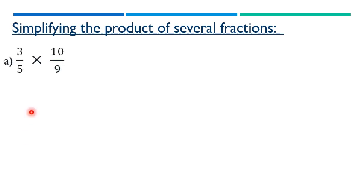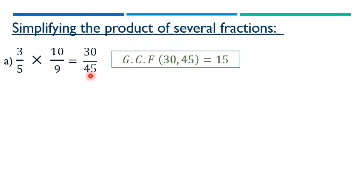Now the idea is simplifying the product of fractions. First method: take 3 over 5 times 10 over 9. Multiply to get 30 over 45. To get the simplest form, divide by the greatest common factor of 30 and 45, which is 15. We get 2 over 3 as the simplest term.